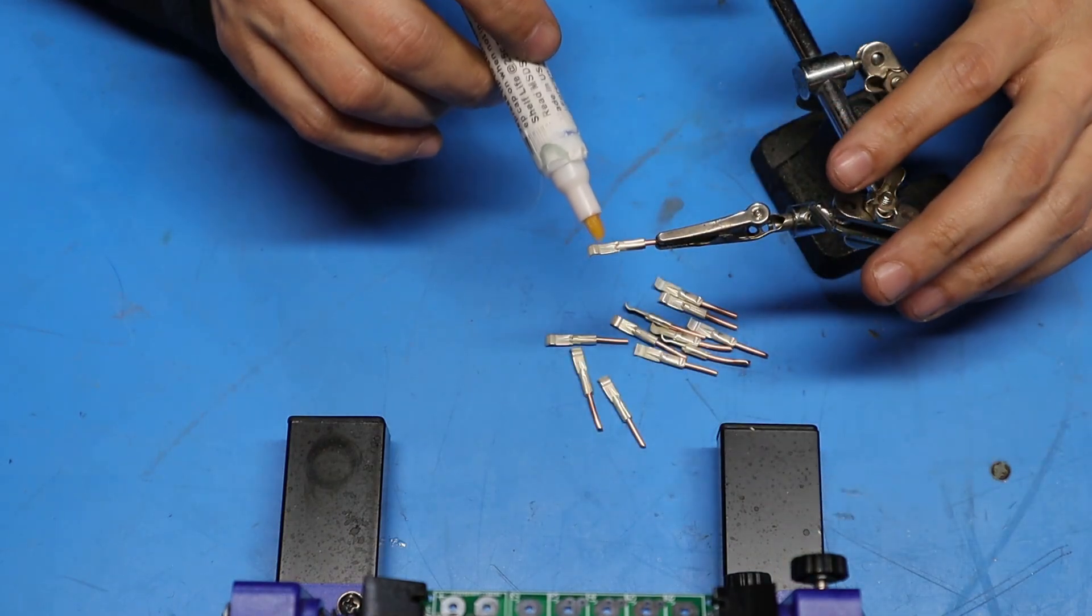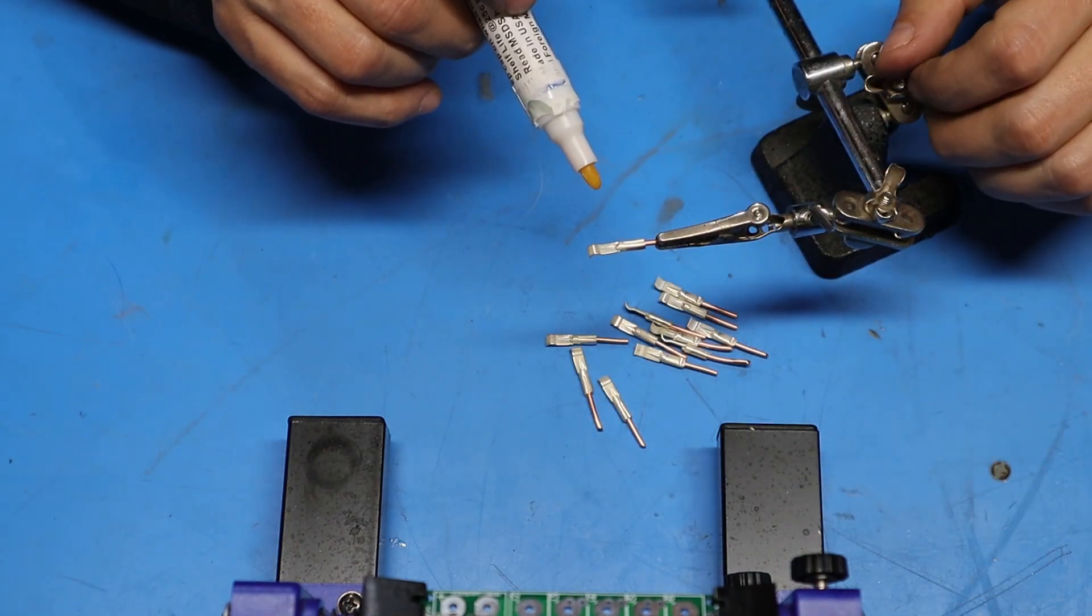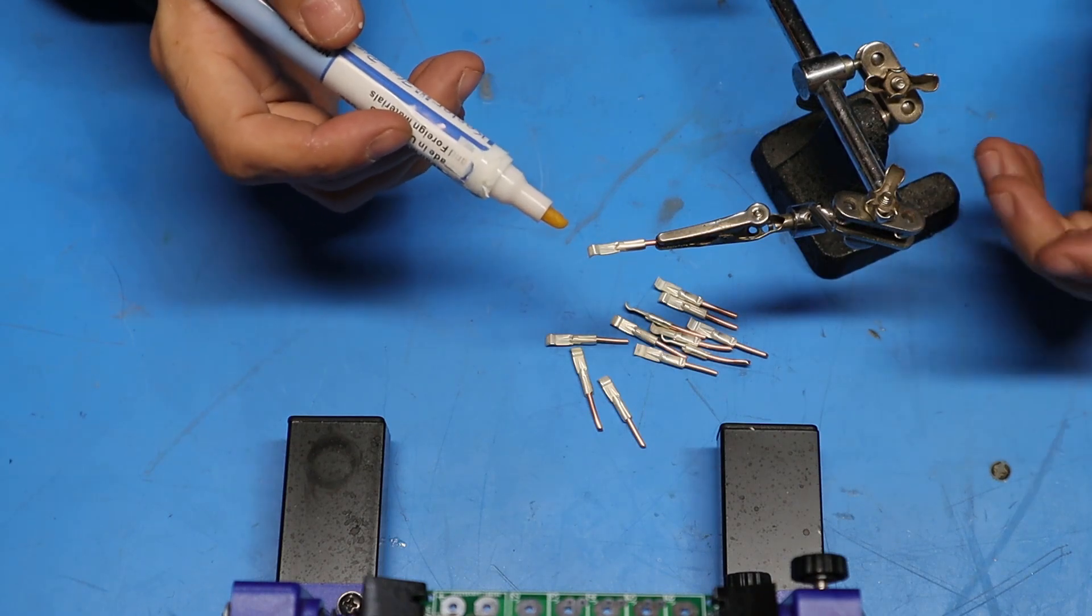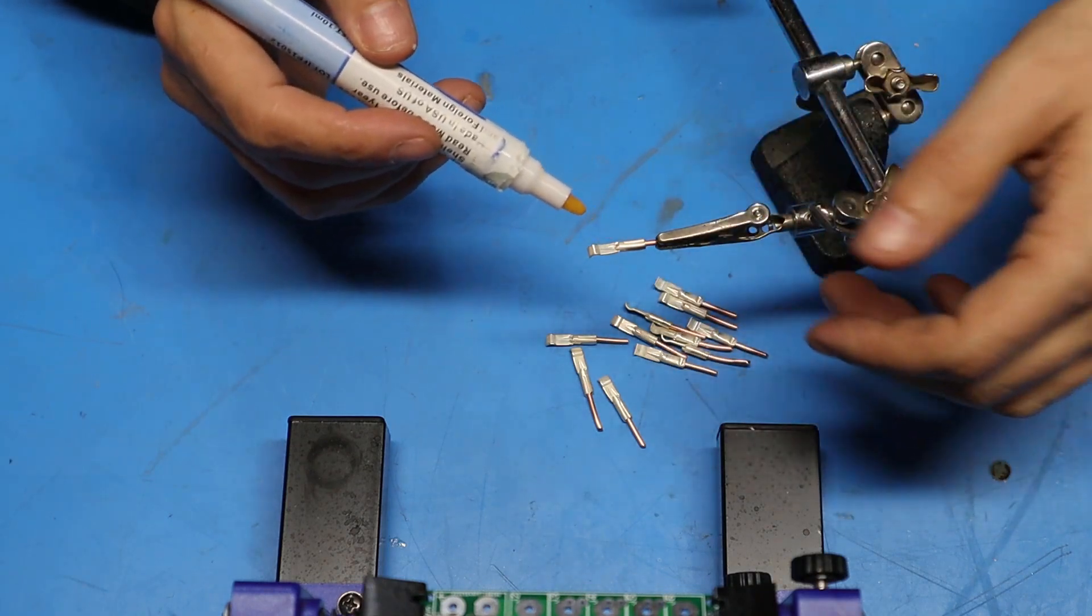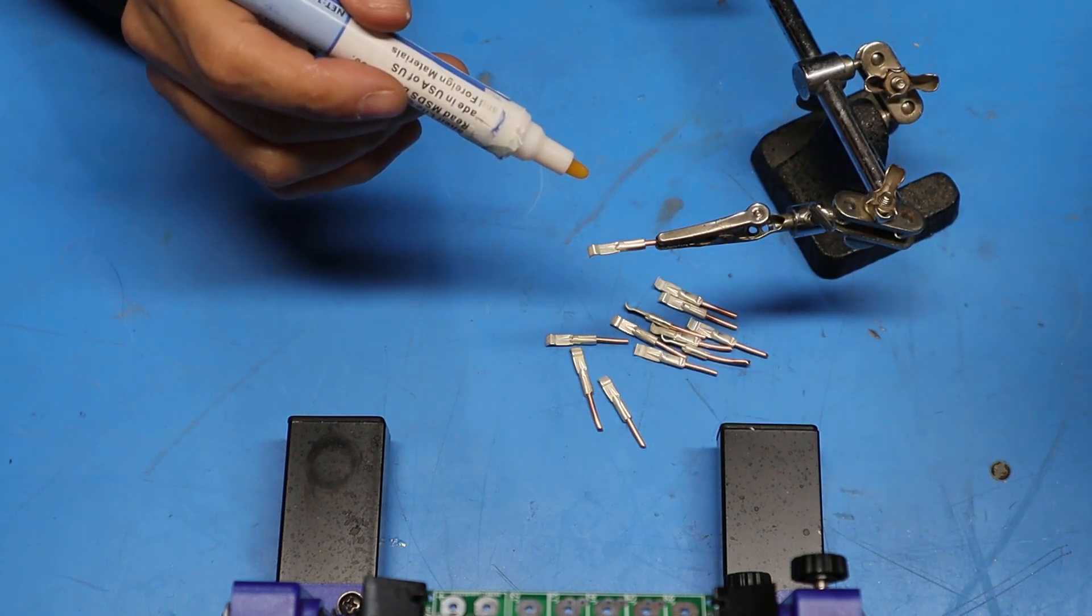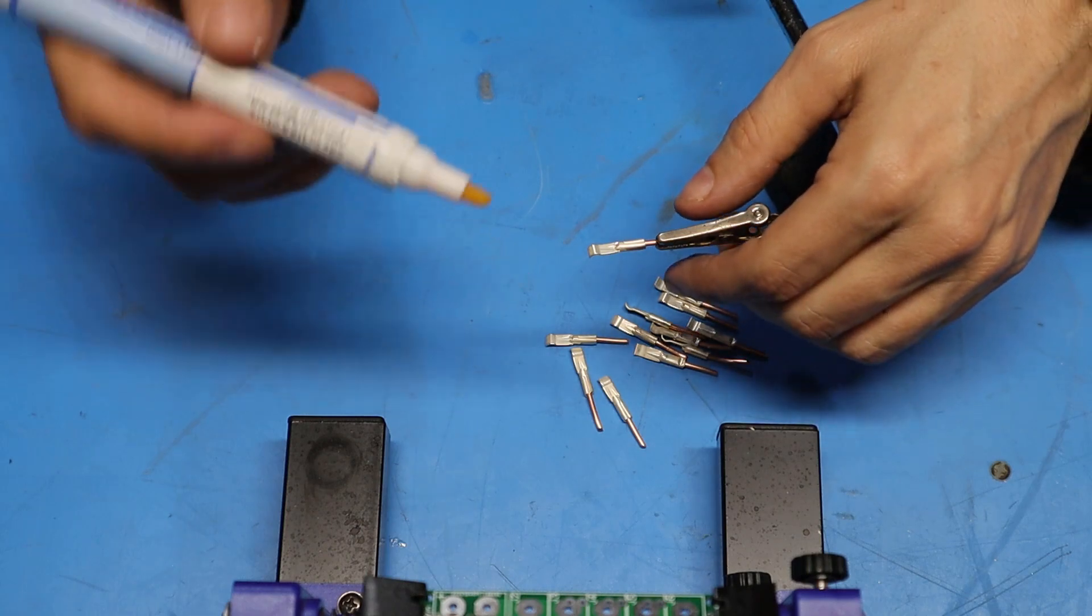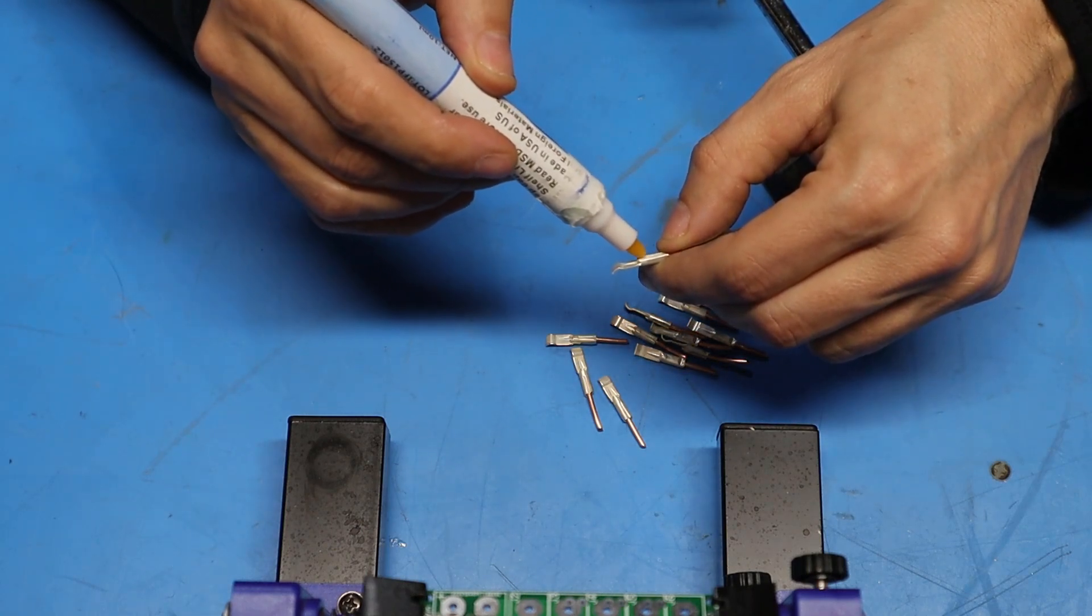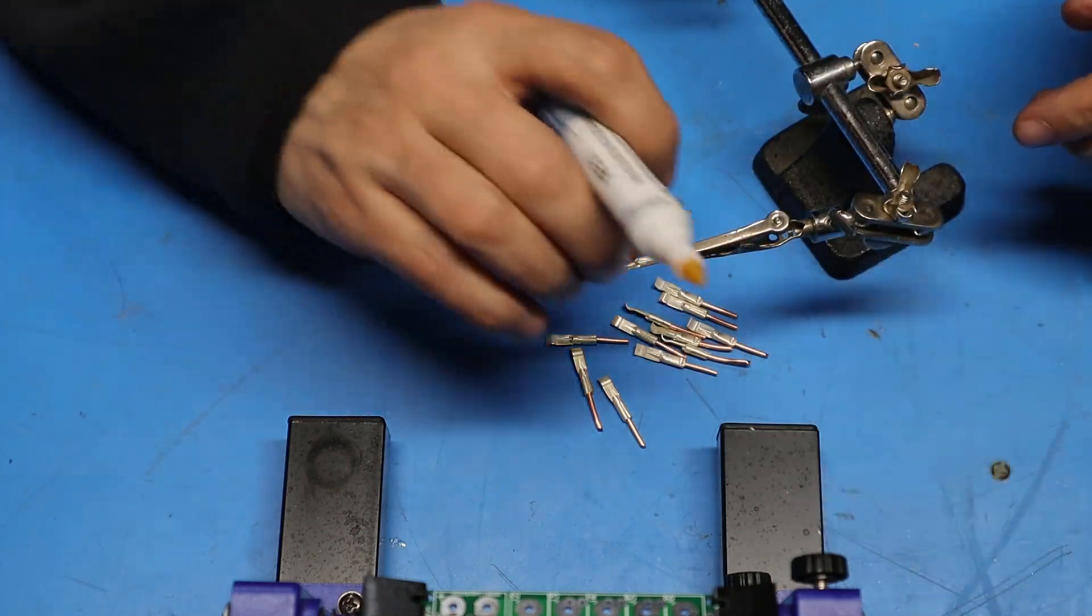The instructions call for crimping and soldering each of these power pole contacts. Probably not necessary to do both but I don't think it would hurt, so I'm going to solder each one. I'm going to leave the soldering iron cranked up to about 340°C or 650°F and put a little flux on each contact to help the solder flow.